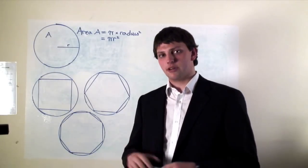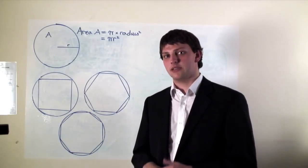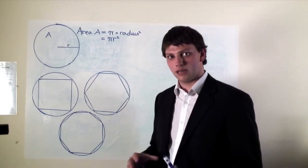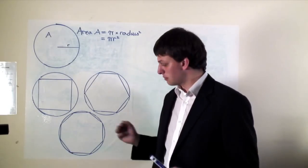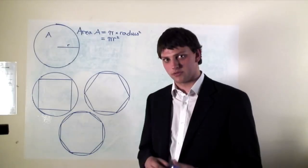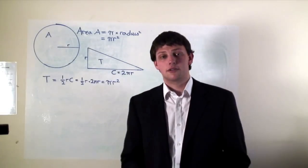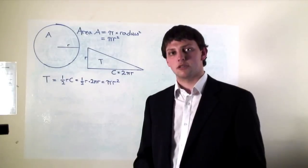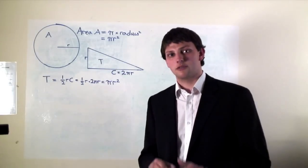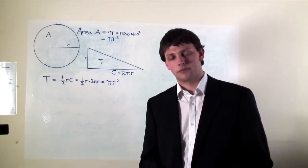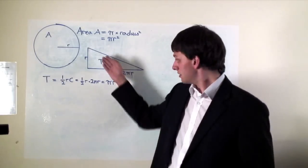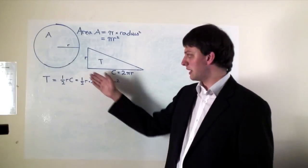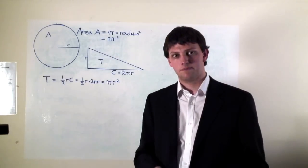If instead we inscribe polygons within the circle, then once again we can get as close as we like to the circle's area by increasing the number of sides. Now we're ready to go after the circle's area. Archimedes does this by comparing the area of the circle to the area of a certain triangle, whose height is the circle's radius r, and whose base is the circle's circumference c.